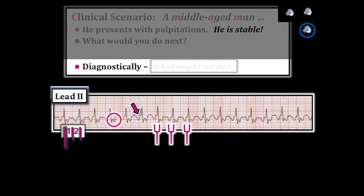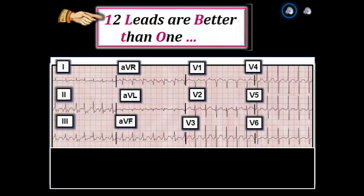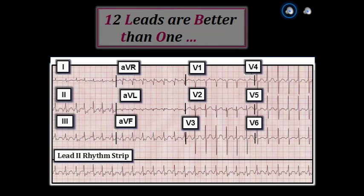Diagnostically, what might we do at this point to help us determine what this rhythm truly is? One of the things to do would be to obtain a 12-lead ECG during the tachycardia, because 12 leads are better than one. Ideally, the 12-lead ECG will have a simultaneously recorded long lead two rhythm strip at the bottom. We realize that not all in-field ECG recorders can record a simultaneous long lead two, and it's also possible you may not be able to obtain a 12-lead ECG during the tachycardia at all. We simply wish to illustrate how helpful a 12-lead can be.